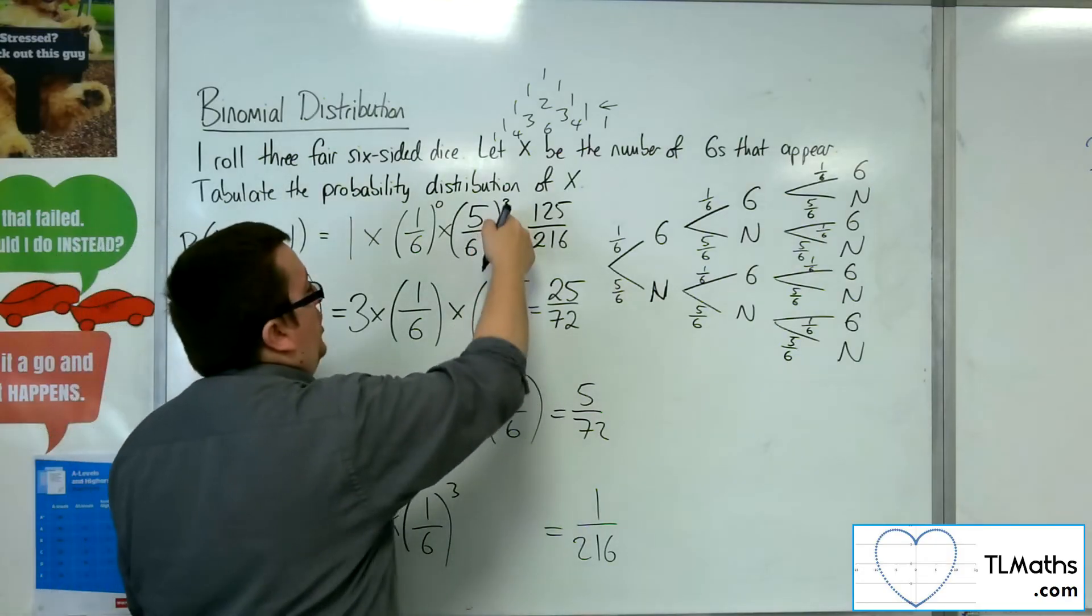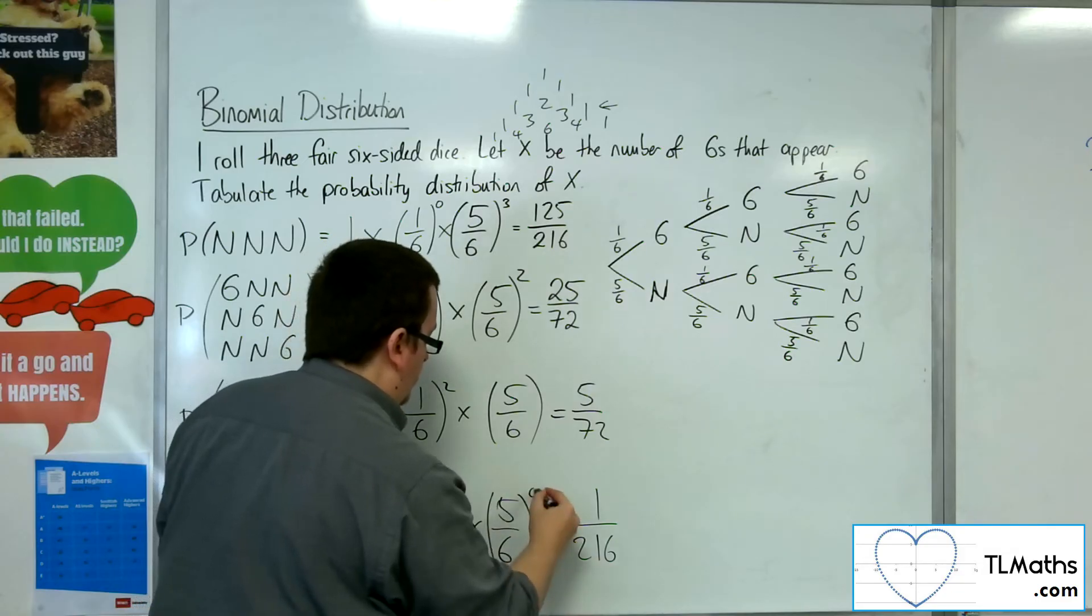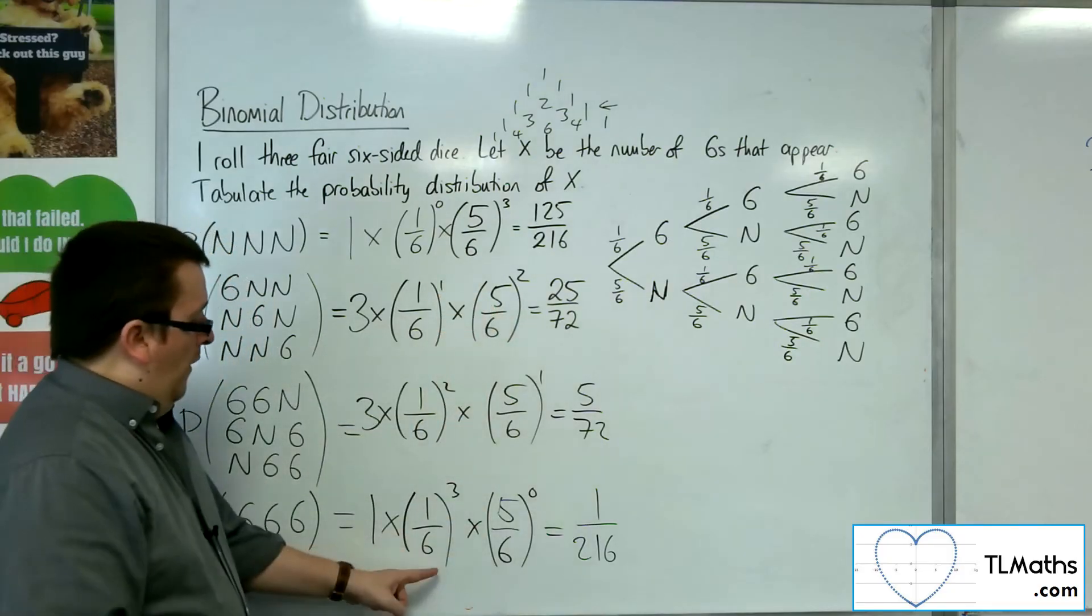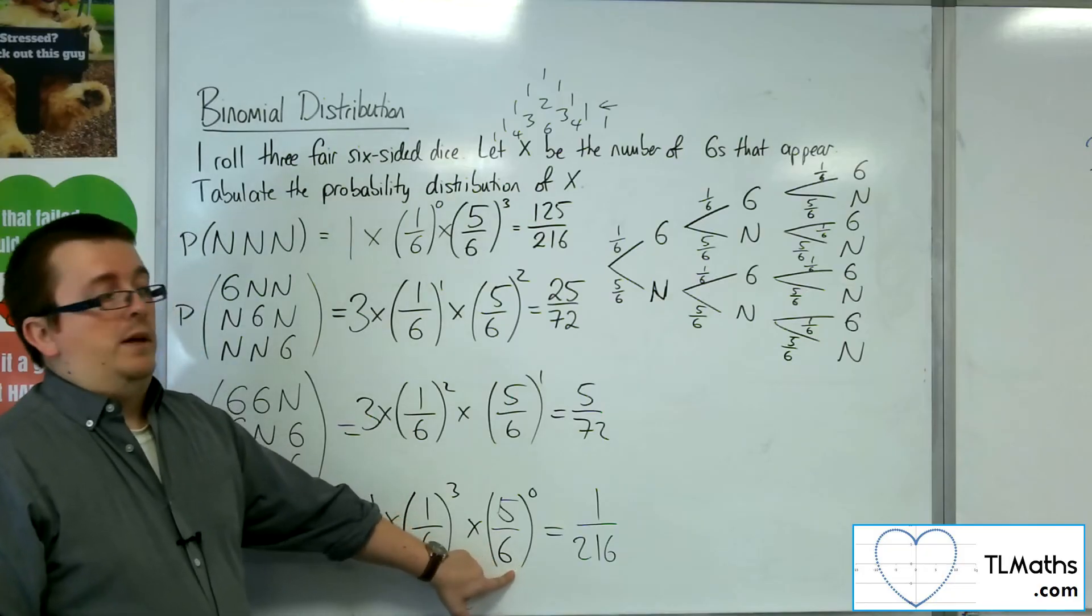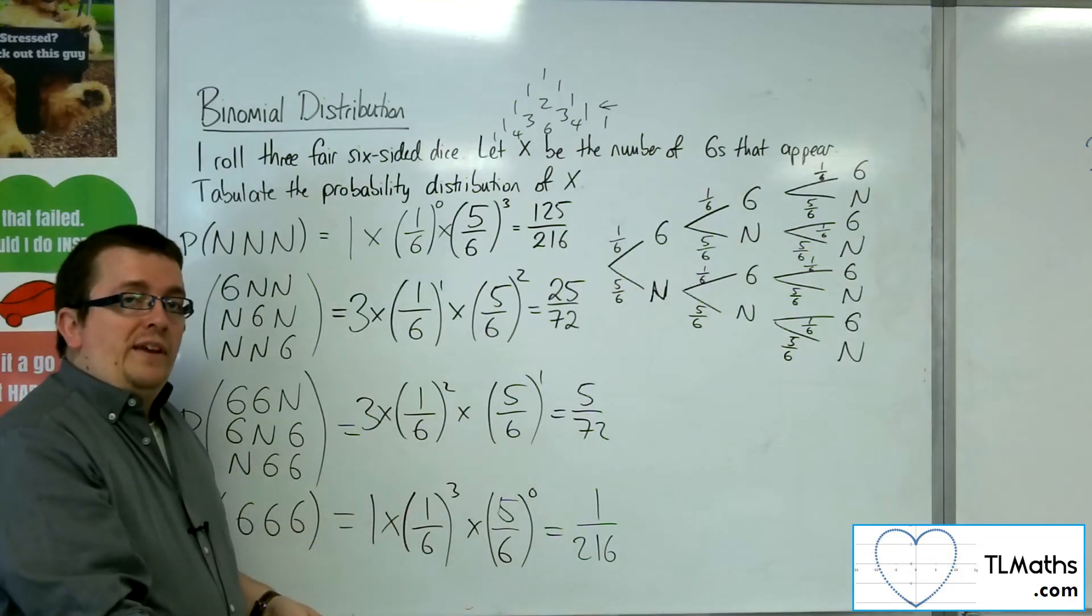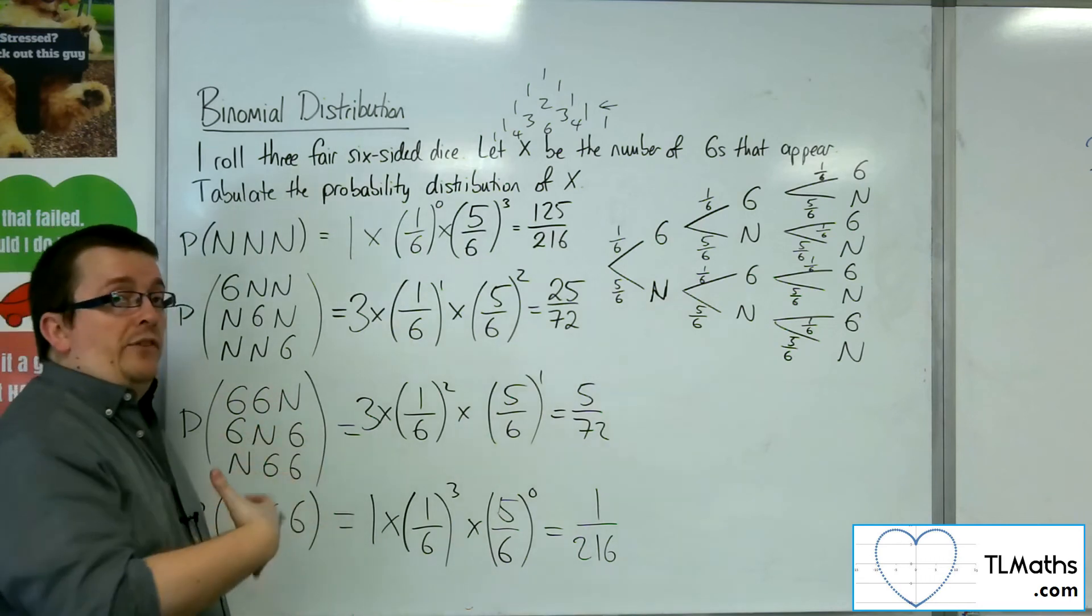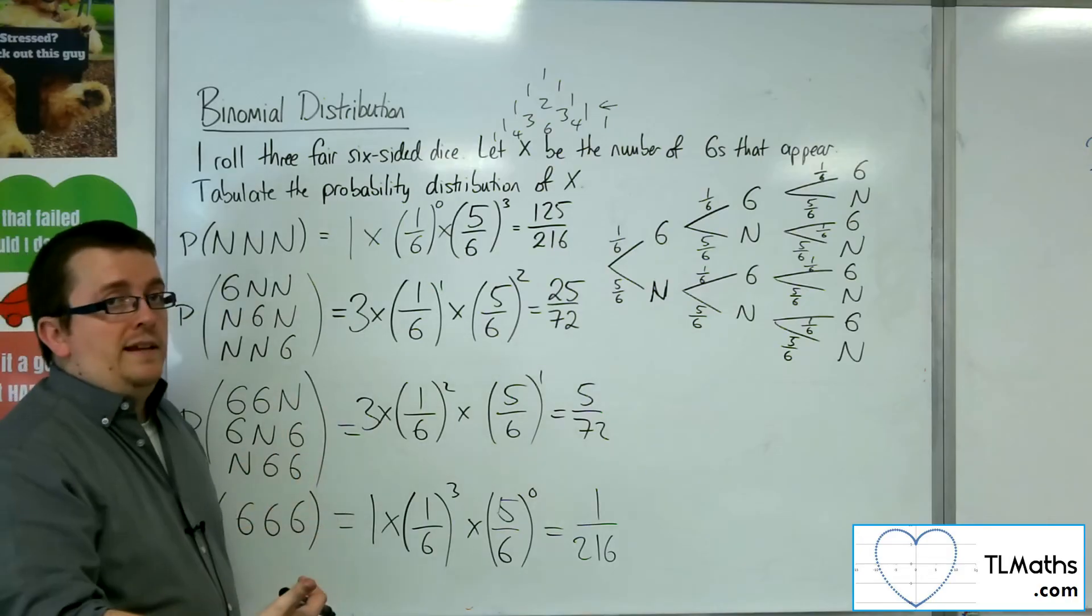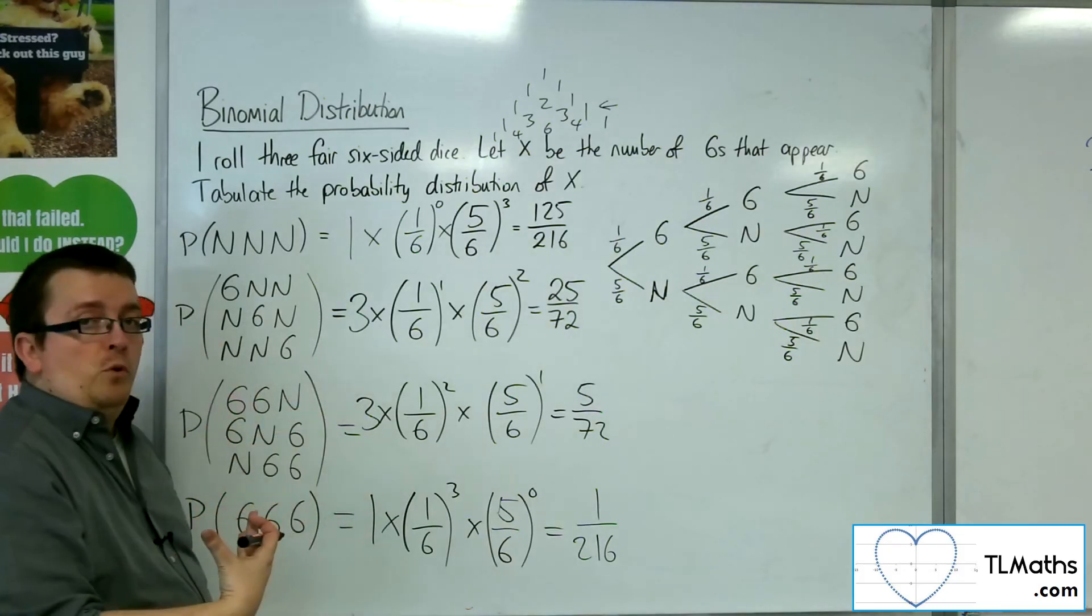We've got these 1 sixth cubed, squared, to the power of 1, to the power of 0. And we've got the 5 sixths cubed, 5 sixths squared, 5 sixths to the 1, times 5 sixths to the 0. Because the idea is that we wanted three sixes to appear, and we didn't want any no sixes to appear. So this is where the binomial probability is really coming from, that binomial idea. Because you've got either the probability of success, the one getting a 6, or the probability of failure, which is 1 take away 1 sixth. So you've got the two possible options.